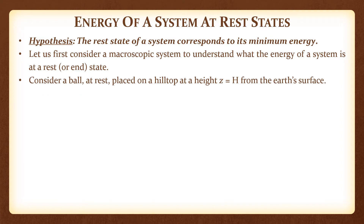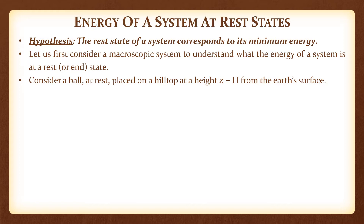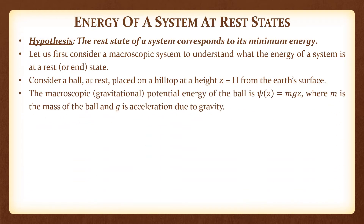Consider a ball at rest placed on a hilltop at a height z equal to h from Earth's surface. The macroscopic gravitational potential energy of the ball is given by mgz, where m is the mass of the ball, g is the acceleration due to gravity, and z is the height from the Earth's surface.